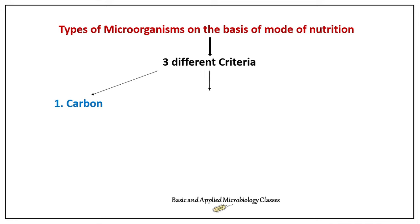The second criteria is on the basis of source of energy — based on their preference for different energy sources available, we can make groups of microorganisms. The third criteria is on the basis of electrons — from which type of compounds electron sources are coming. According to this, we can classify microorganisms. So let's come to criteria number one: on the basis of carbon.